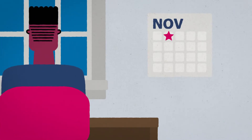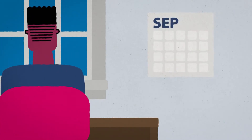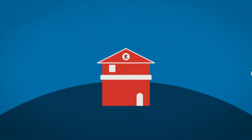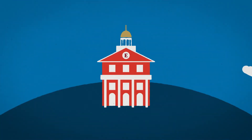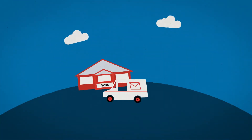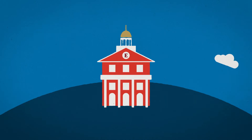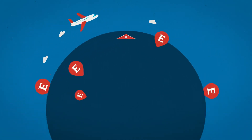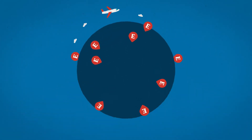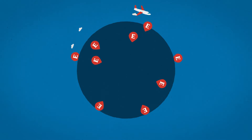You'll want to get this process started well before the election. Voter registration forms and absentee ballots take some time to get processed — they have to move through the election boards and the Postal Service. And if you'll be studying abroad, be sure to allow even more time for your absentee ballot to get to you wherever you are in the world.